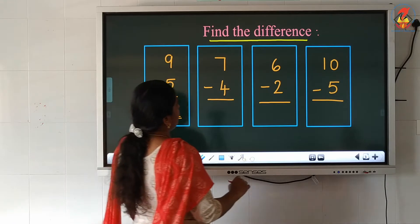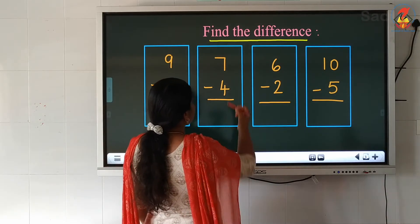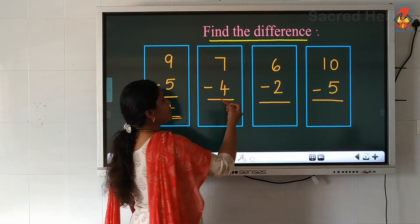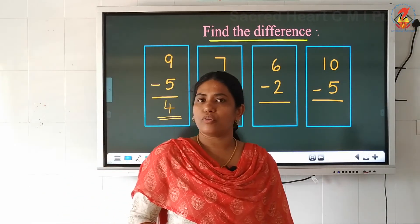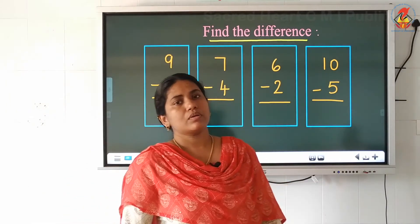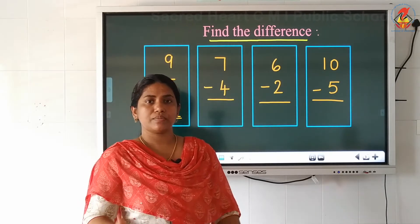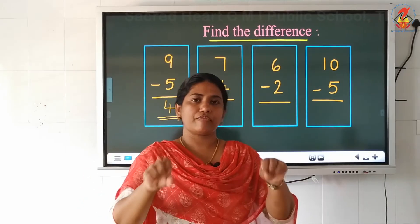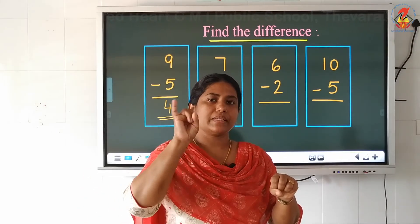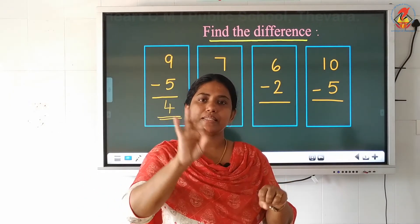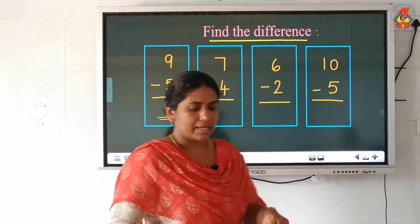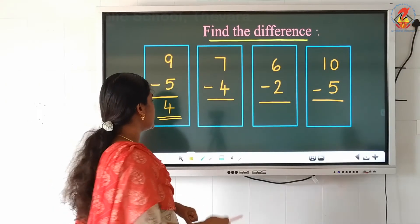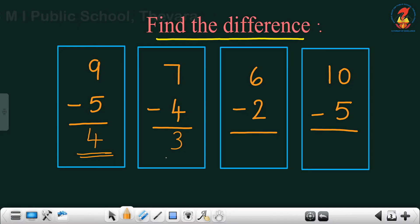Now look at the next question: 7 minus 4. Which is the small number? 4. So start counting after the small number. After 4: 5, 6, 7. How many fingers did I raise? 3. So 3 is our answer.